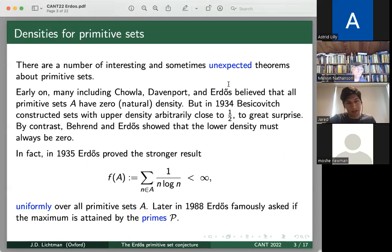But moreover, in Erdős's proof in 1935, he showed the stronger result that the sum of one over n log n, ranging over elements in a primitive set, is always finite. So in this talk, we'll be very interested in this sum, which we'll denote by f(A) for this series of one over n log n. And he showed, in fact, that this sum, f(A), is uniformly bounded over all primitive sets A.